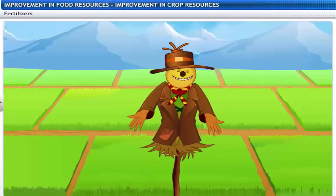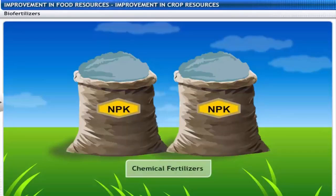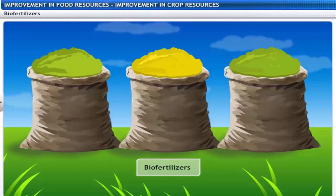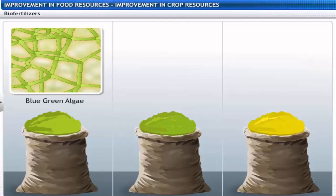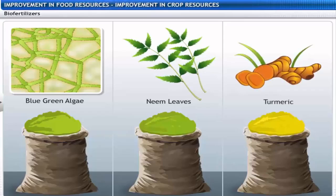However, continuous use of fertilizers kills useful microorganisms and destroys soil fertility. That is why chemical fertilizers are being replaced with bio-fertilizers. These are biological agents used in organic farming — for example, blue-green algae are used to prepare bio-fertilizer, and neem leaves or turmeric are used in grain storage as bio-pesticides. The use of bio-fertilizers is emphasized to maintain soil fertility.